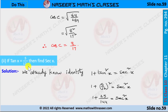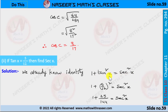Second bit: if tan x equals 5 by 12 is given, then find sec x. We can find this by using the identity 1 plus tan²x is equal to sec²x. Now we substitute the tan x value, so it can be written as 1 plus 5 by 12 whole square is equal to sec²x.